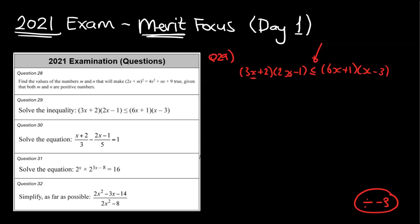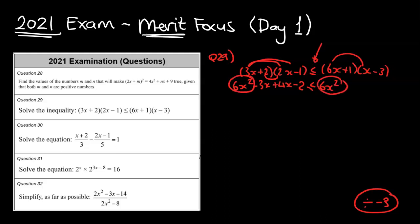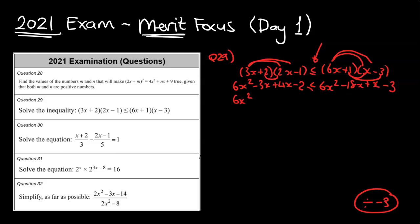Using the rainbow method: expanding the left gives 6x squared minus 3x plus 4x minus 2. Expanding the right gives 6x squared minus 18x plus x minus 3. I notice I've got 6x squared on both sides — they cancel out, so it won't even be a quadratic at the end. Simplifying: left side is 6x squared + x − 2, right side is 6x squared − 17x − 3.